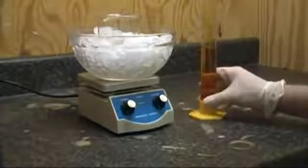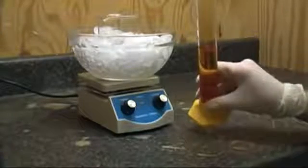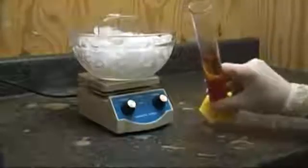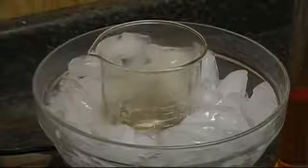In the graduated cylinder is 70 milliliters of concentrated nitric acid. Once the sulfuric acid is cold, begin stirring and very, very slowly start adding the nitric acid. The nitric acid is the stronger acid of the two and will deprotonate the sulfuric acid generating the nitronium ion in situ.